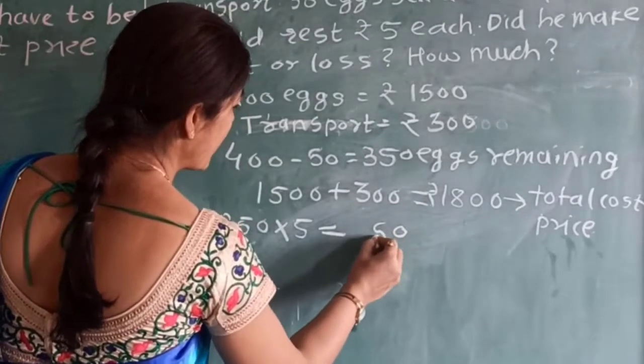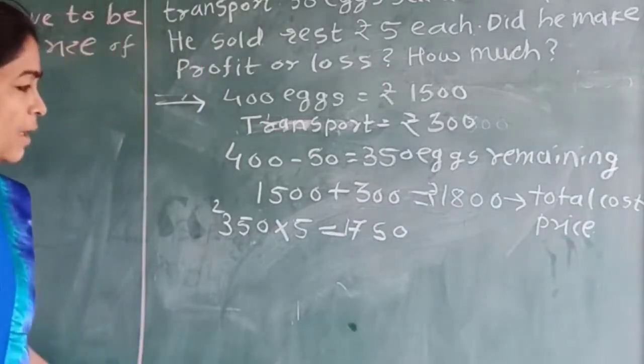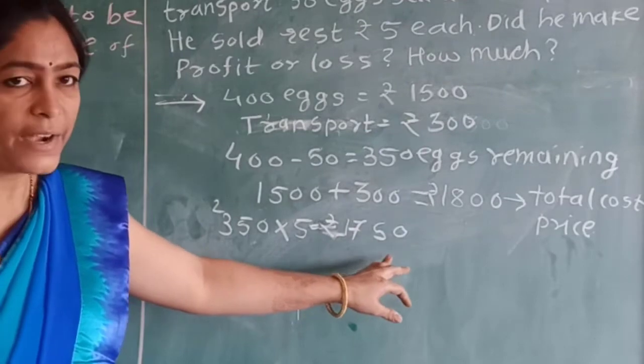Do the multiplication, 5 fives are 25, and the selling price is Rs.1,750.